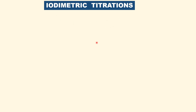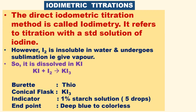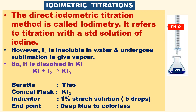What are iodimetric titrations? The direct titration method is called iodimetric. It refers to titration with a standard solution of iodine — a standard solution of iodine in the conical flask.